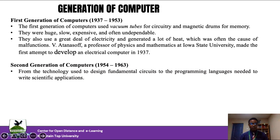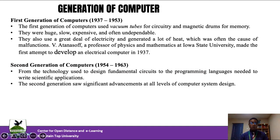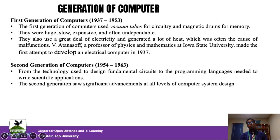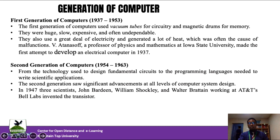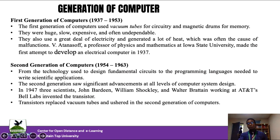By the second generation of computers — between 1954 and 1963, at the end of the Second World War — advancement in computer system design had come to fruition. Computers now had programming languages. First generation computers were limited to machine codes, but by the second generation, von Neumann had created the stored program concept, allowing information to be translated between levels using assemblers and compilers. In 1947, John Bardeen, Shockley, and Walter, working at AT&T, created the first transistor, which replaced vacuum tubes and ushered in the second generation.